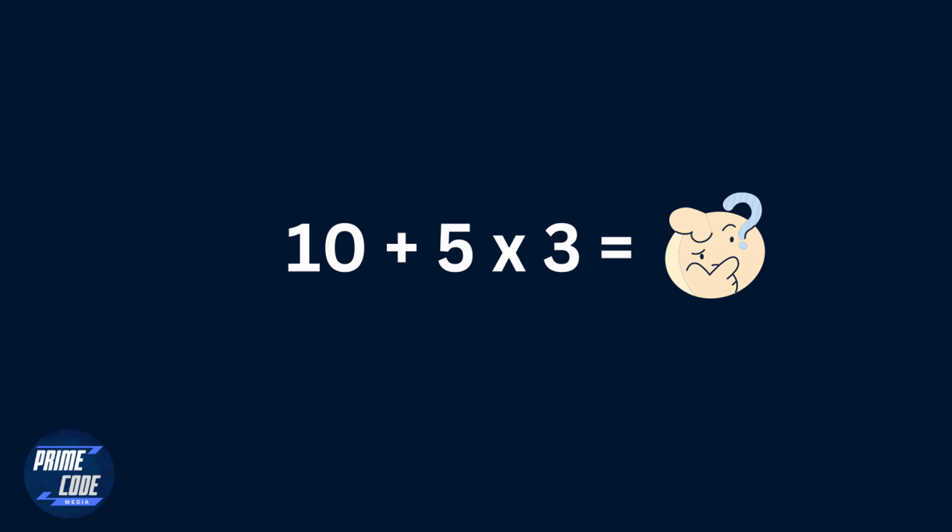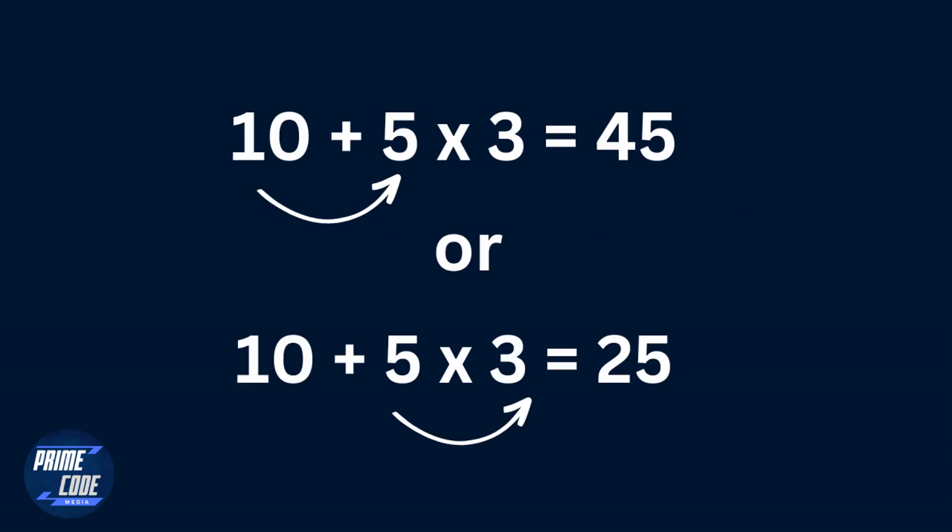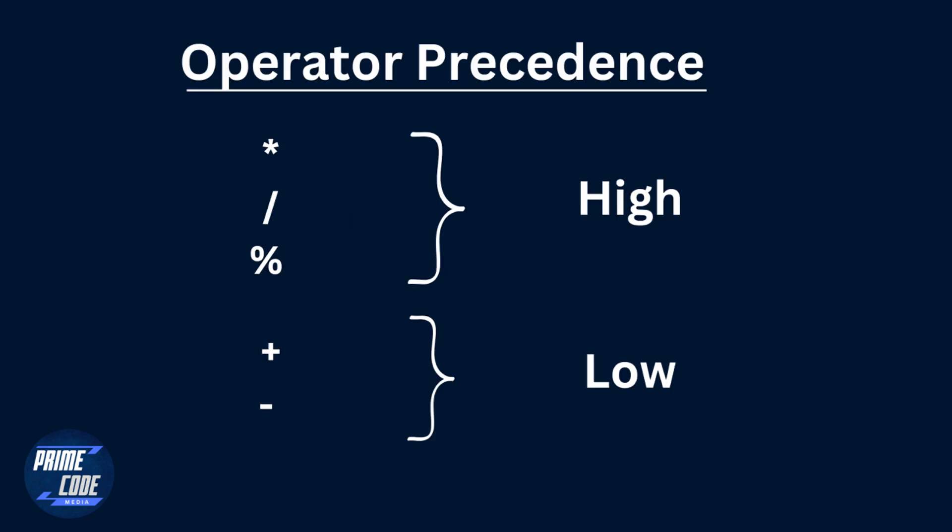Let's take for example 10 plus 5 multiply by 3. What is the result here? Is the result 45, which we will get by adding 10 to 5 to get 15 and multiply 15 by 3 to get 45? Or is the result 25, which we will get by multiplying 5 by 3 to get 15 and then add that 15 to 10 to get 25? Which one is it? The answer here is that when there is more than one operator in an expression...